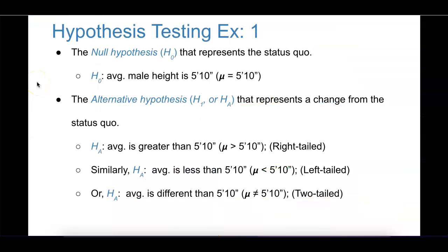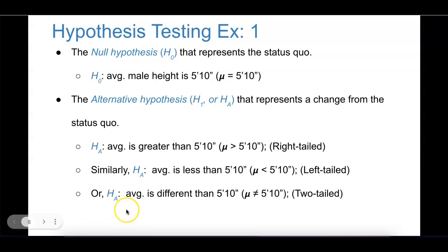The previous scenario could also be done as a left-tailed or a two-tailed test. A researcher could think the average height is now less than 5'10", which would be a left-tailed test. Or maybe the researcher doesn't know in what direction it's changed — they just believe it's different than 5'10". In that case, the researcher would conduct a two-tailed test, equivalent to saying mu is not equal to 5'10".